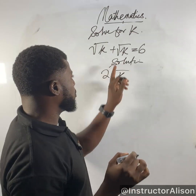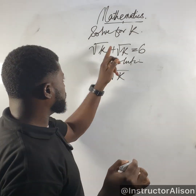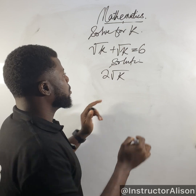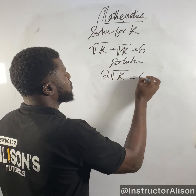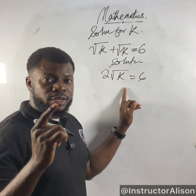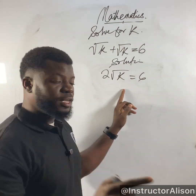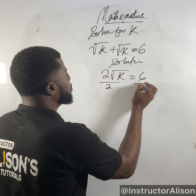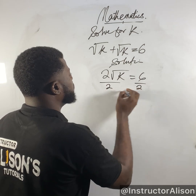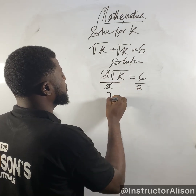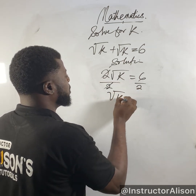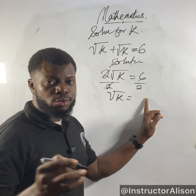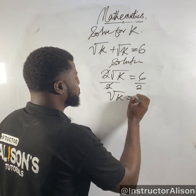With k, they are common — just pick one. The coefficients, 1 and 1, add up to give you 2. Equals 6. The next thing, because you're looking for the value of k, you want to divide both sides by 2. And if you divide both sides by 2, the 2 will eliminate, leaving us with root k equal to 6 divided by 2, which is just 3.